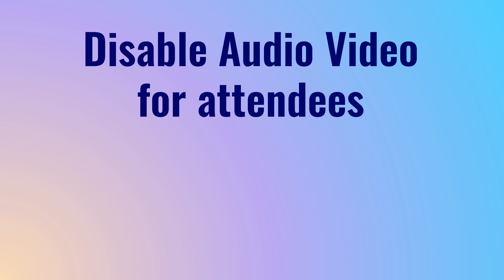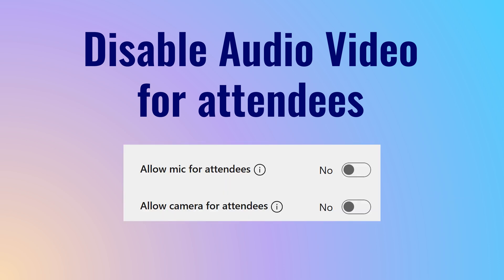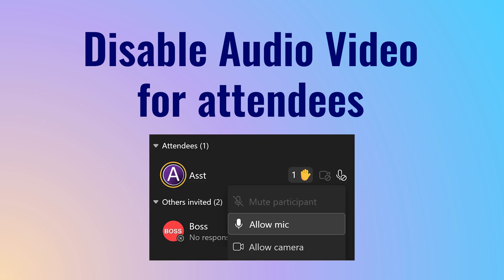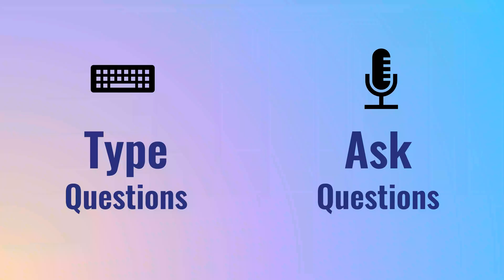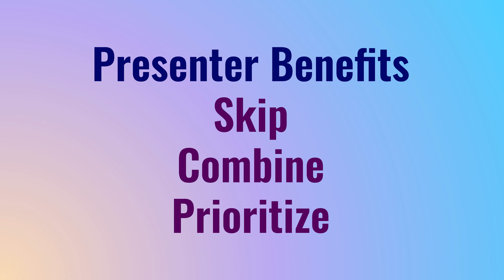I strongly recommend that by default you should disable microphone and video for all attendees. We can still encourage interaction by asking people to raise hands and selectively allowing them mic and video. I prefer that the audience types their question rather than asks it, because then they can put the question as soon as it comes to their mind. And as a presenter, I also have more flexibility of skipping some questions, prioritizing them, combining multiple questions and so on.